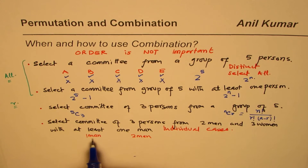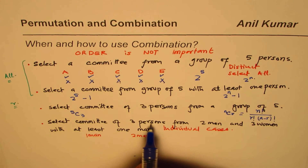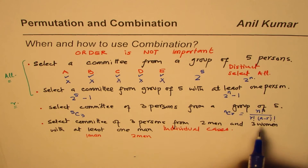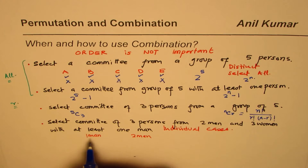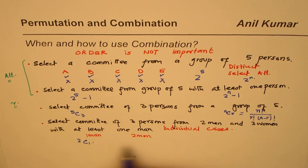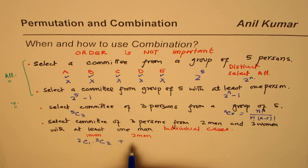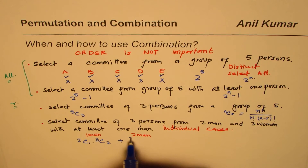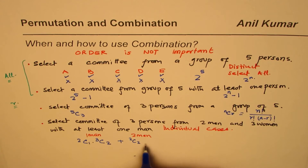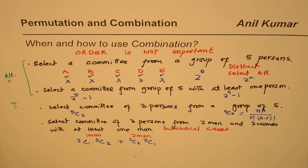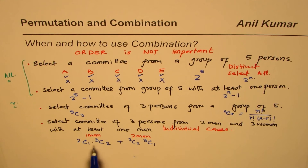If you choose one man, and three persons must be selected, then you are choosing two women. So from two men choose one, and from three women choose two. Alternatively, you could choose two men, and then select one woman from three. These are the individual cases that must be treated on a case-by-case basis, and you sum the results to get the answer.